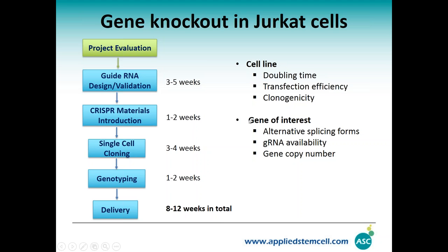During project evaluation we also need to check the gene of interest. You need to know which splicing isoform you want to knock out — if there is a specific isoform, make sure the exon you are targeting is unique. For a knockout project we have very high flexibility because there is a lot of space where you can generate knockouts. Note the gene copy number — many cell lines are aneuploid. If your cell line has two to three copies it is probably easy, but if you have more than five or six copies, knockouts can be challenging and a second or third round of targeting may be necessary.